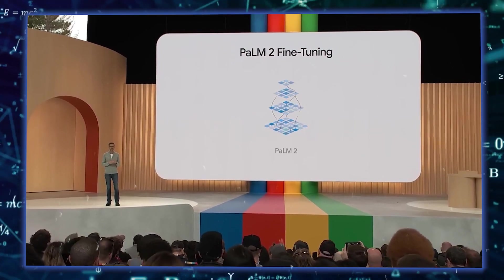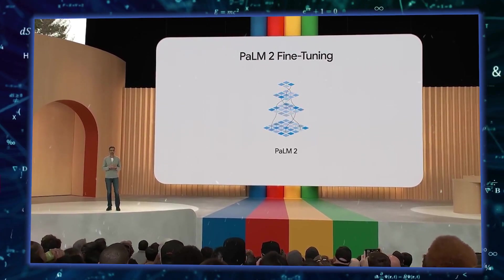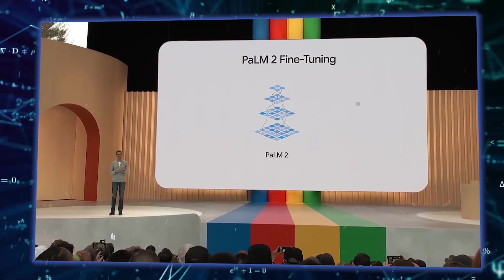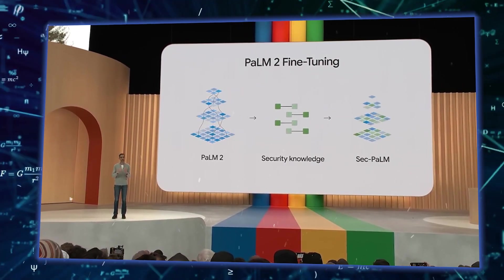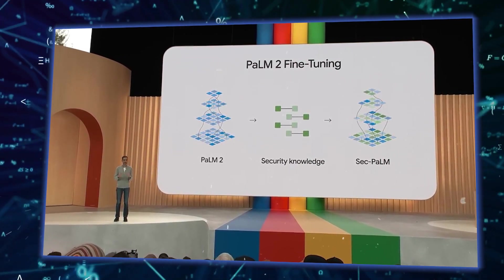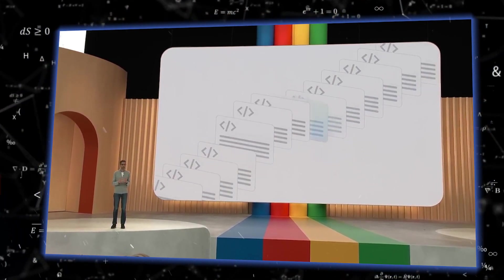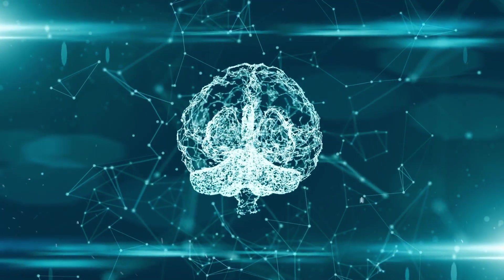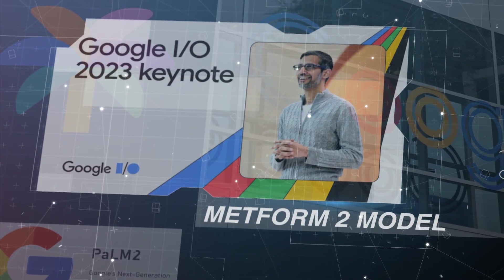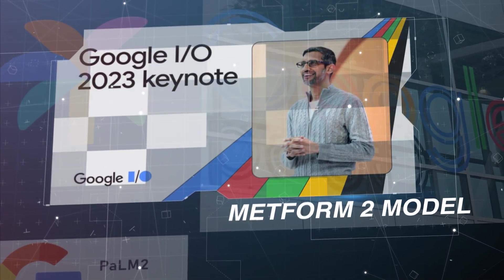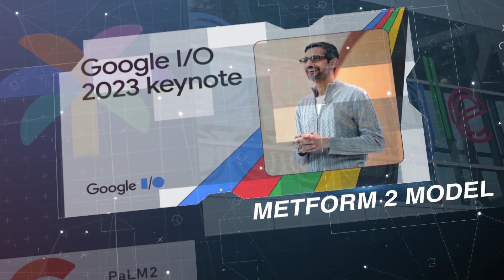The success of Med-PaLM 2 stems from the fine-tuning process that was specifically tailored to medical knowledge within PaLM 2. This focused refinement has resulted in a remarkable reduction in inaccurate reasoning by a factor of 9. Notably, the Med-PaLM 2 model, built upon the foundation of PaLM 2, has attained expert-level performance on medical licensing exam-style questions, establishing itself as the current state-of-the-art in the field.